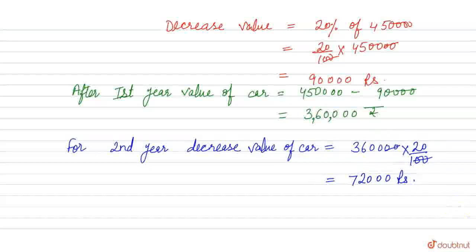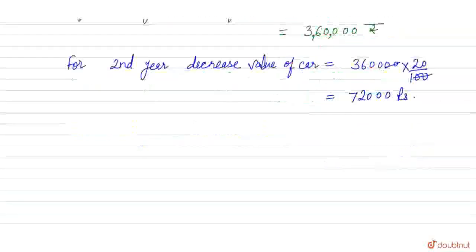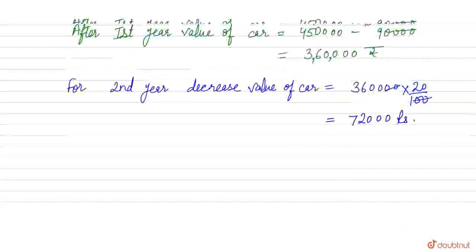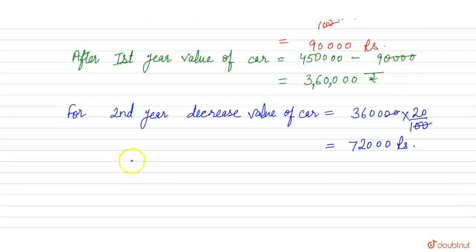So it will decrease by 72,000 in the second year. Meaning, after one year it decreased by 90,000, and the next year it will decrease by 72,000.